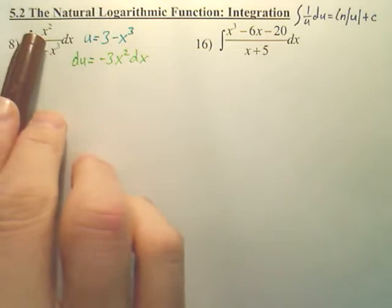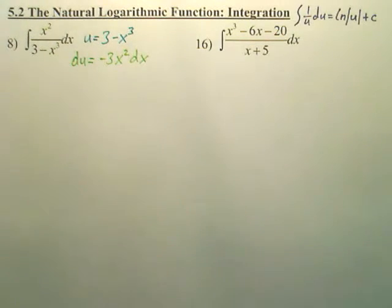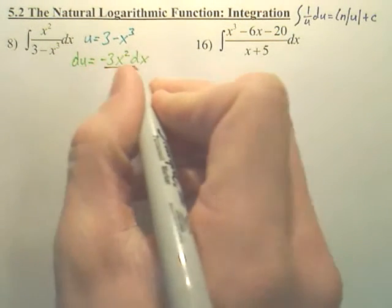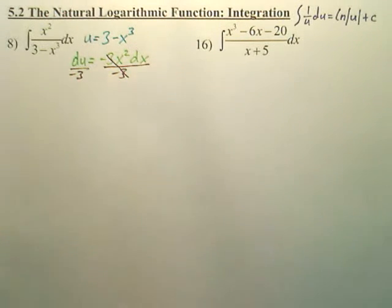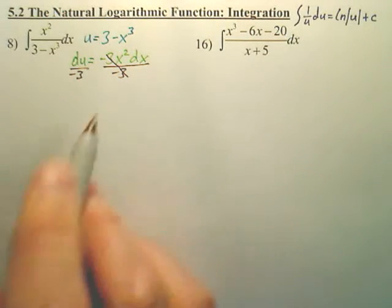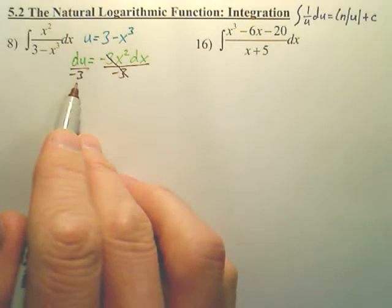I need just x squared dx, so if I want this just to be x squared dx, I have to move over the negative 3. So I have x squared dx is du over negative 3.